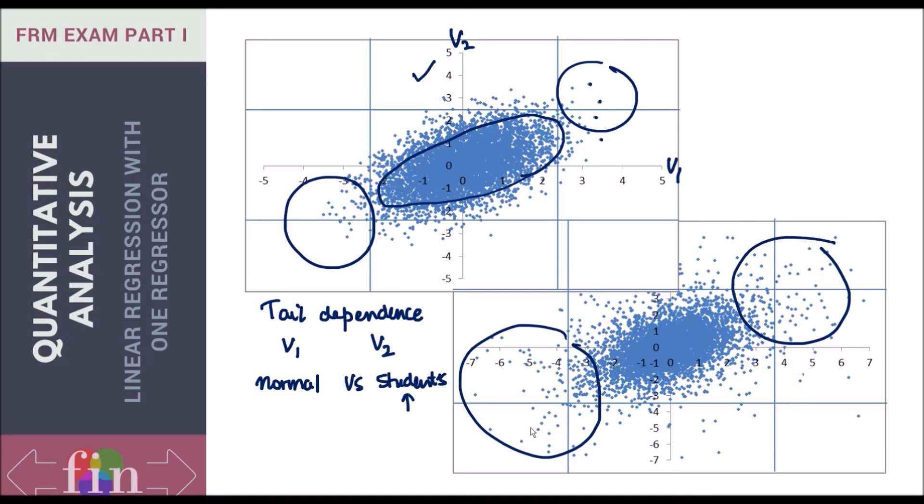In normal distribution, two stocks going down or up together is a rare event, while in student's t distribution it's not as rare. Therefore, if you want to model the joint distribution or joint behavior of two market variables, the student's t copula would be a better choice compared to the Gaussian copula. The Gaussian copula is based on normal distribution, while student's t copula is based on student's t distribution.